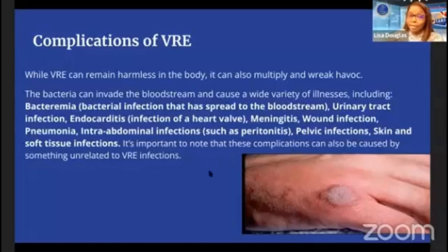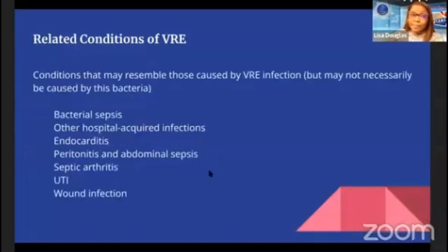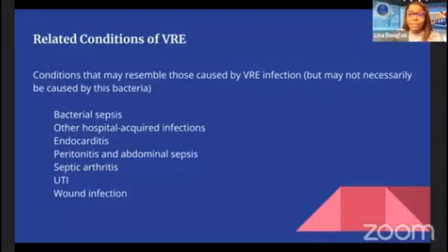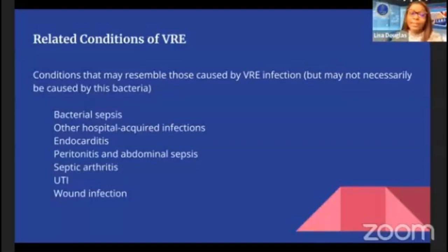It is important to note that these complications can also be caused by something unrelated to VRE infection, so make sure this is being diagnosed by a provider. Related conditions that may resemble VRE infections but may not be caused by this bacteria include bacterial sepsis, other hospital-acquired infections, endocarditis, peritonitis, abdominal sepsis, septic arthritis, and UTI. These conditions can mimic VRE, so appropriate diagnosis is essential.